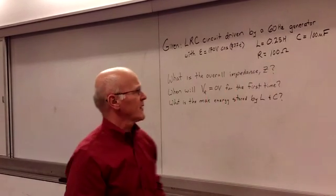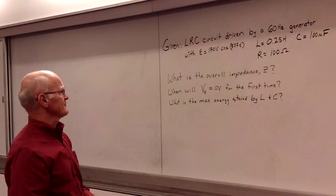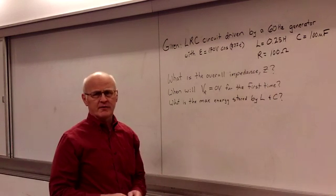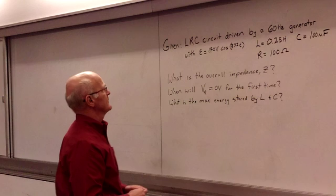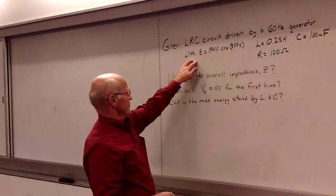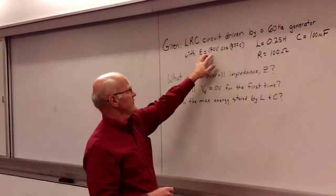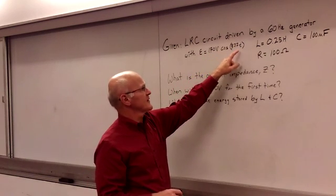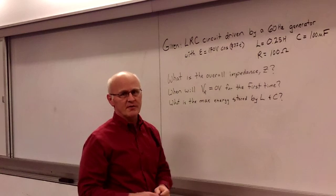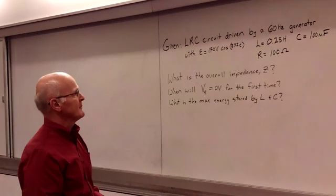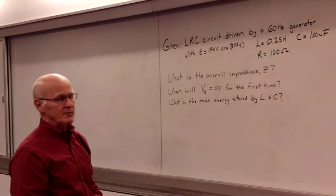Okay, and what we have for today's problem is an RLC circuit, driven by a 60 hertz generator that you find in everyday life. The EMF by the generator is 170 volts times cosine 377 times the time, and 377 radians per second corresponds to 60 hertz, given by omega equals 2 pi f.